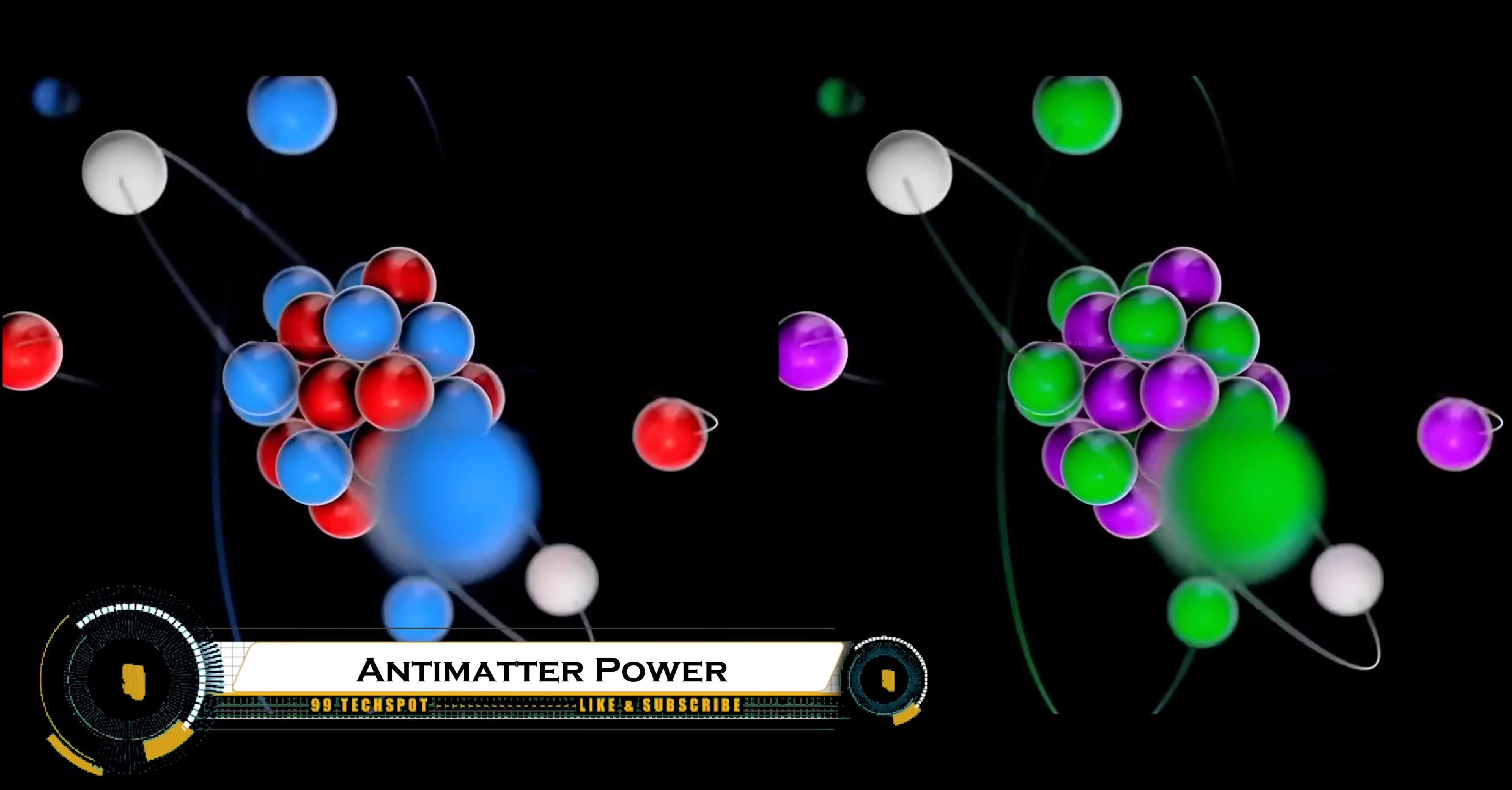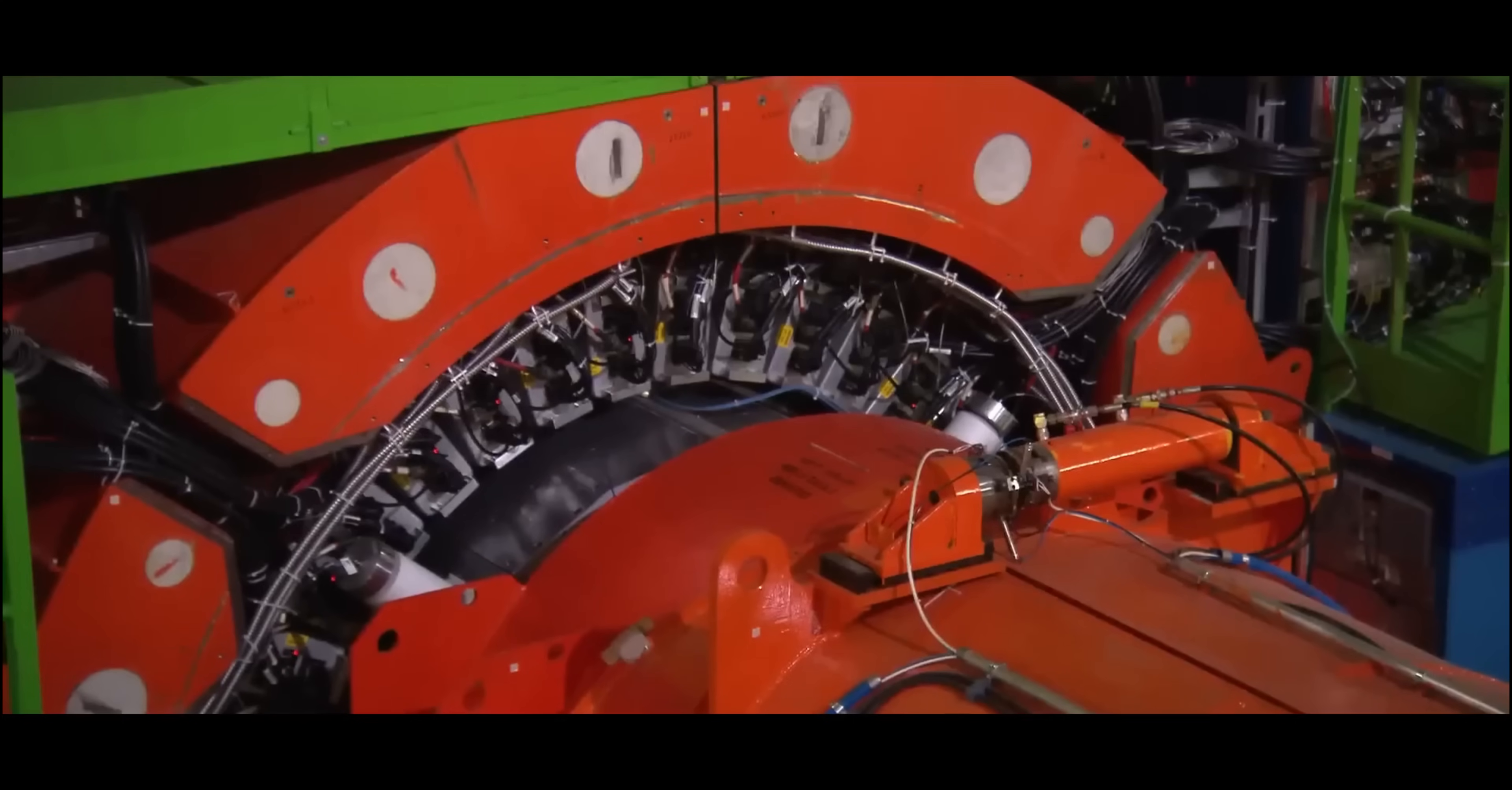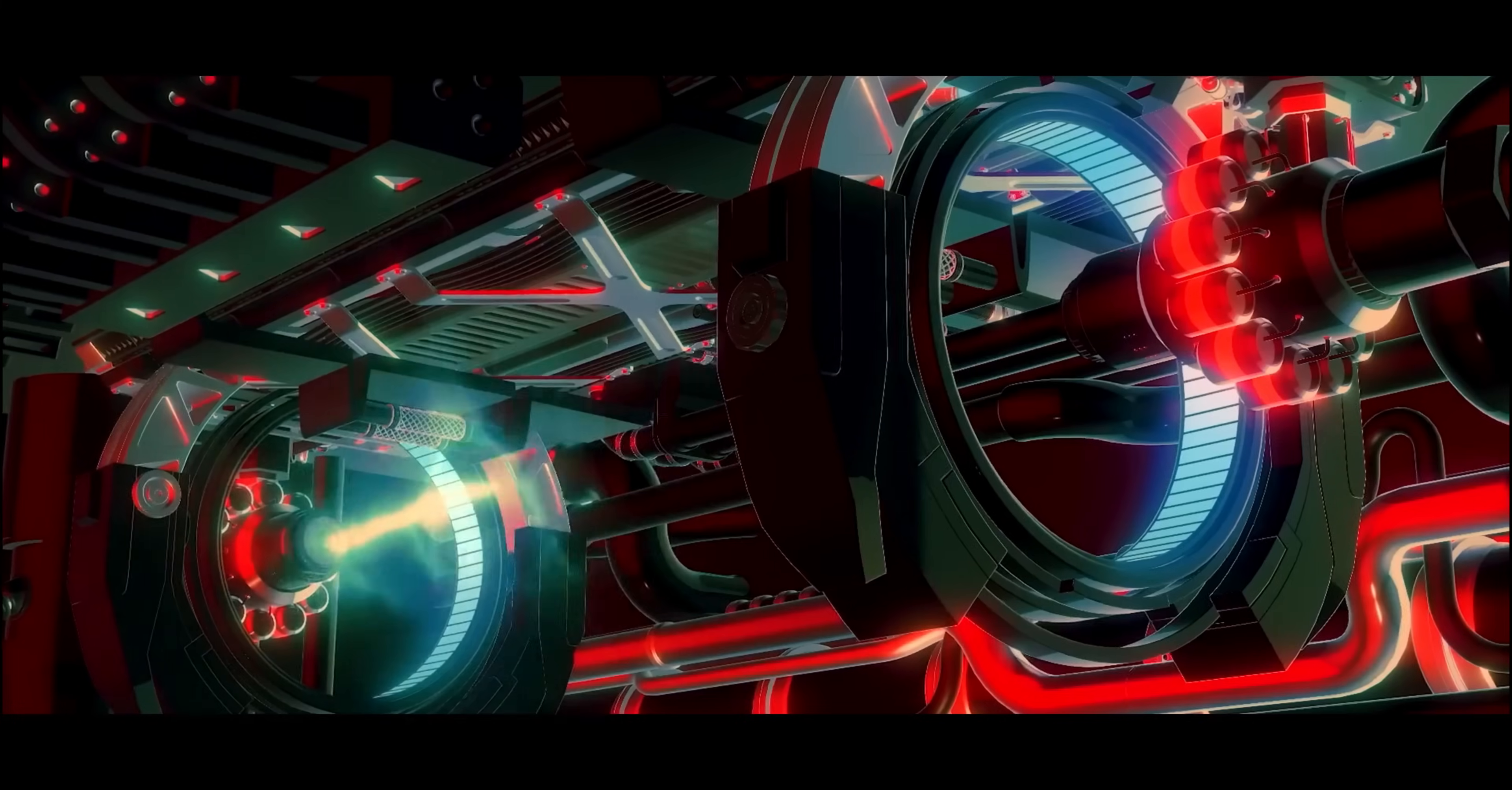Anti-matter power, the ultimate energy source. Anti-matter is often called the most powerful energy source in the universe. When anti-matter meets matter, they annihilate each other, releasing pure energy based on Einstein's famous equation E equals MC squared. This reaction is millions of times more powerful than chemical combustion and far more efficient than nuclear fusion.